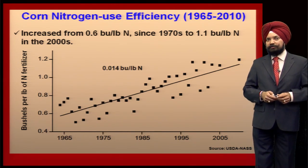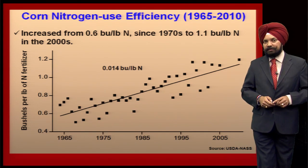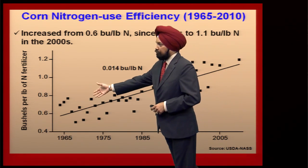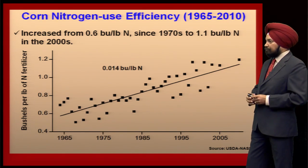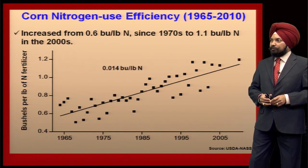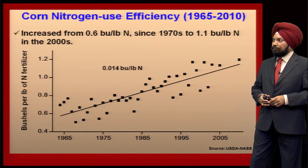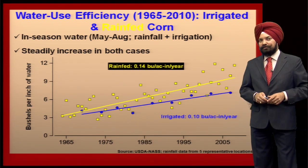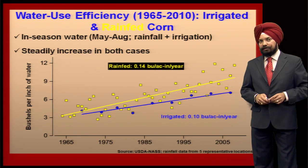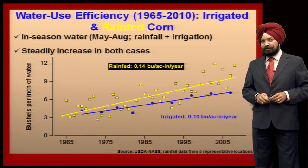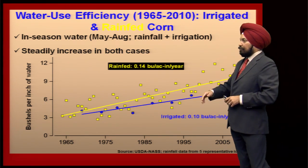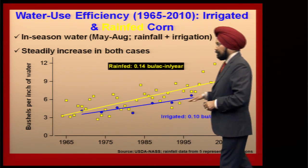This means there is an increase in nitrogen use efficiency over time. Nitrogen use efficiency is calculated as corn yield per unit of nitrogen fertilizer applied. We can see that the nitrogen fertilizer use efficiency has increased linearly over time from 0.6 bushels per pound of nitrogen in the mid-1960s up to 1.1 bushels per pound in 2010. Water use efficiency is calculated as corn yield produced per unit of water applied during the season, counting both irrigation and rainfall received from May to August, and water use efficiency has also increased linearly for rain-fed as well as irrigated fields over time.